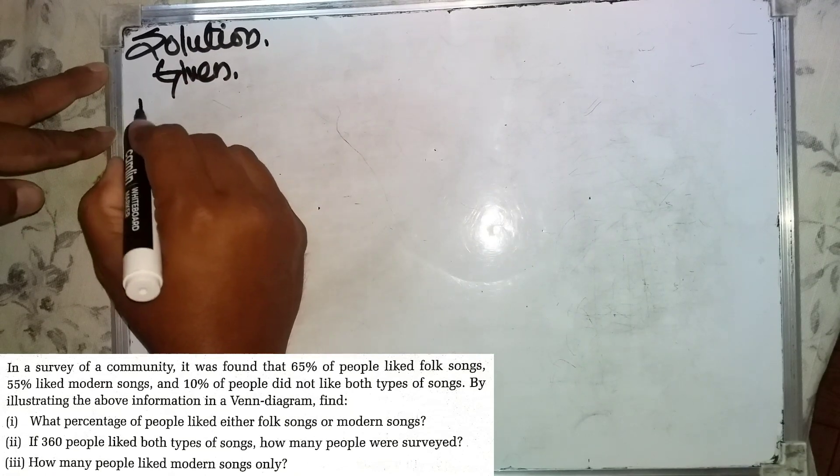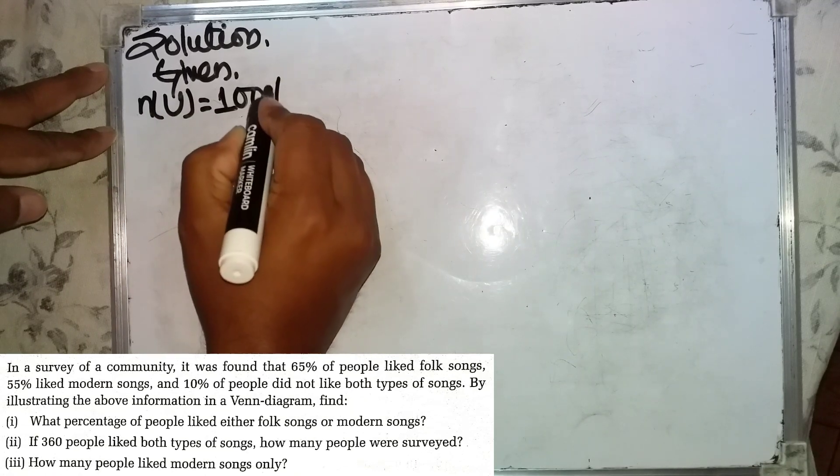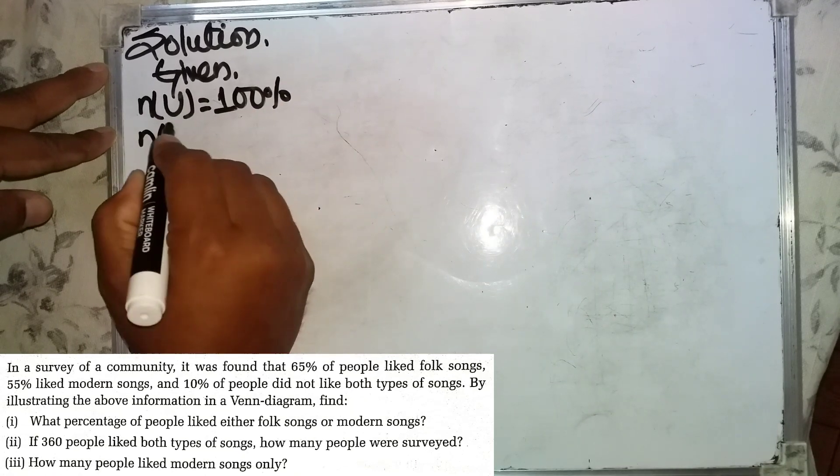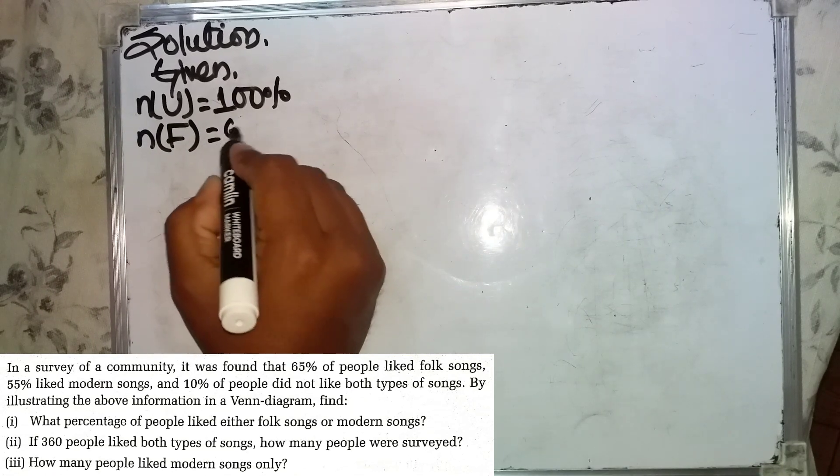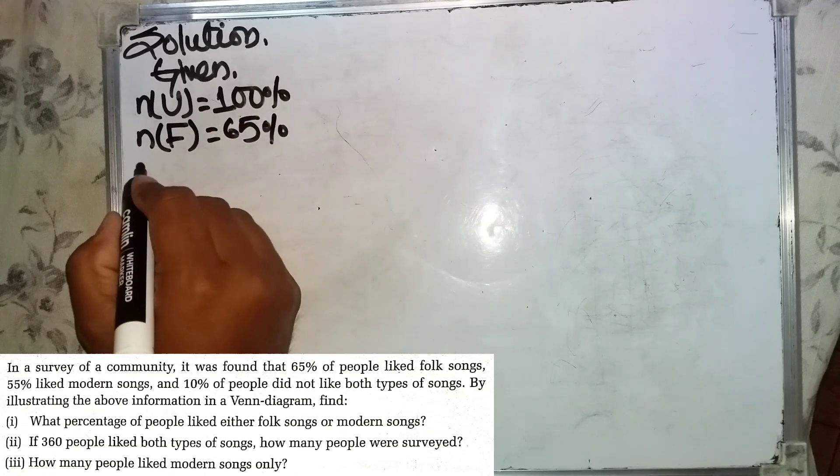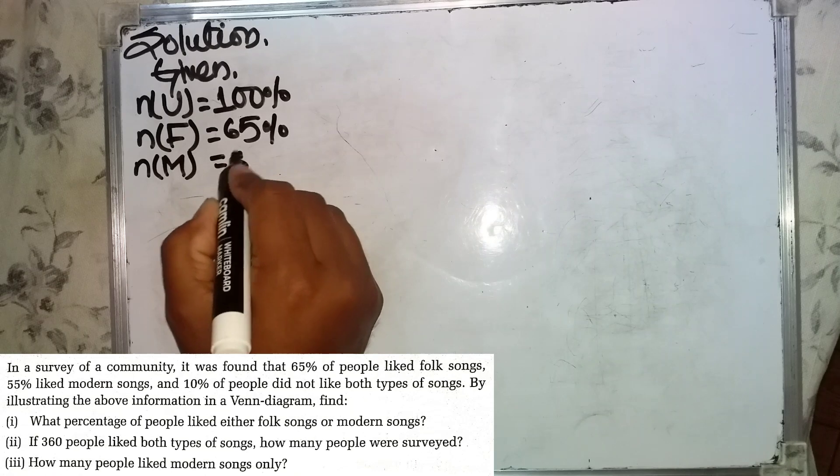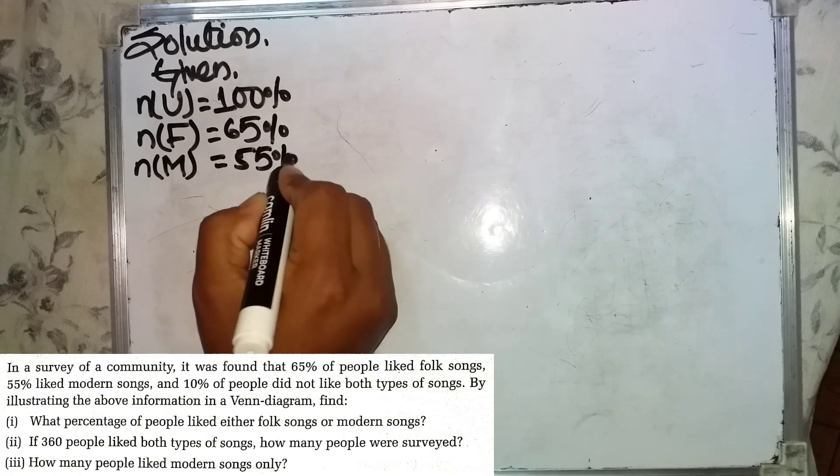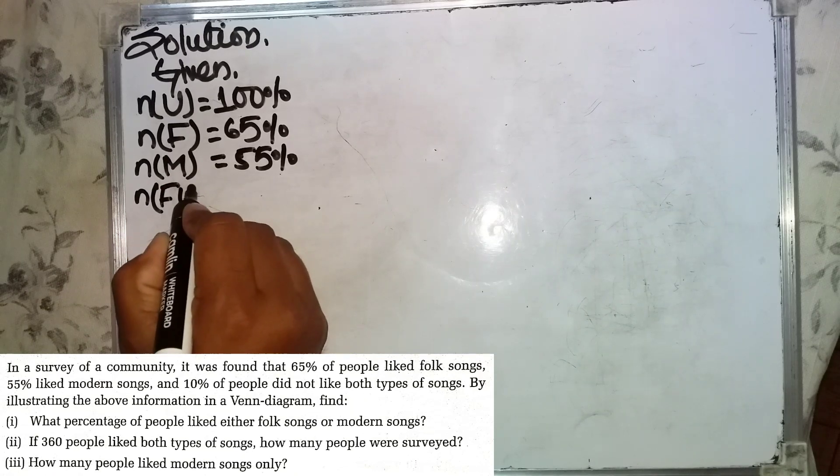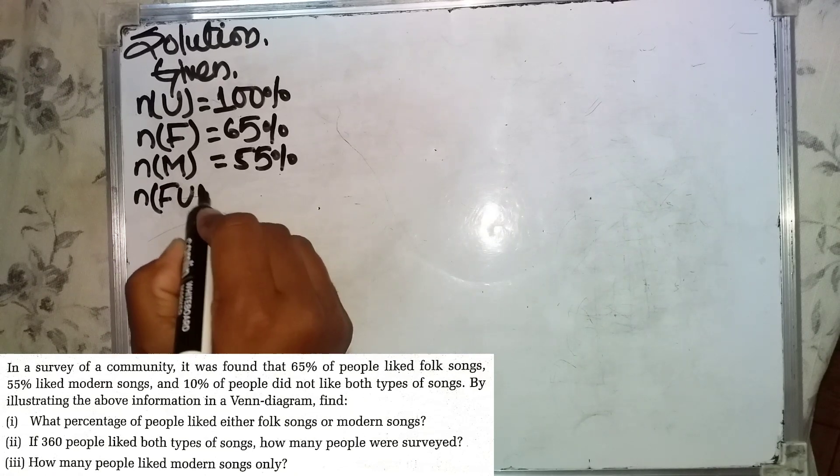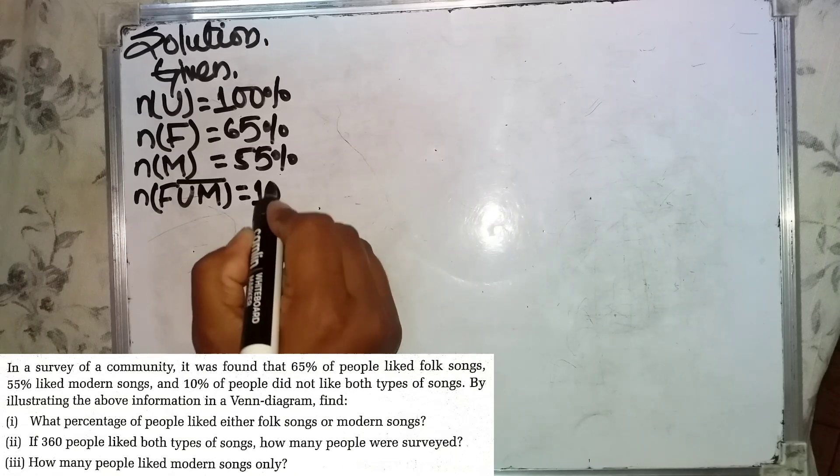Let me set up the notation. N equals total number, N of F equals 65%, N of M equals 55%, and N of F union M complement equals 10%.